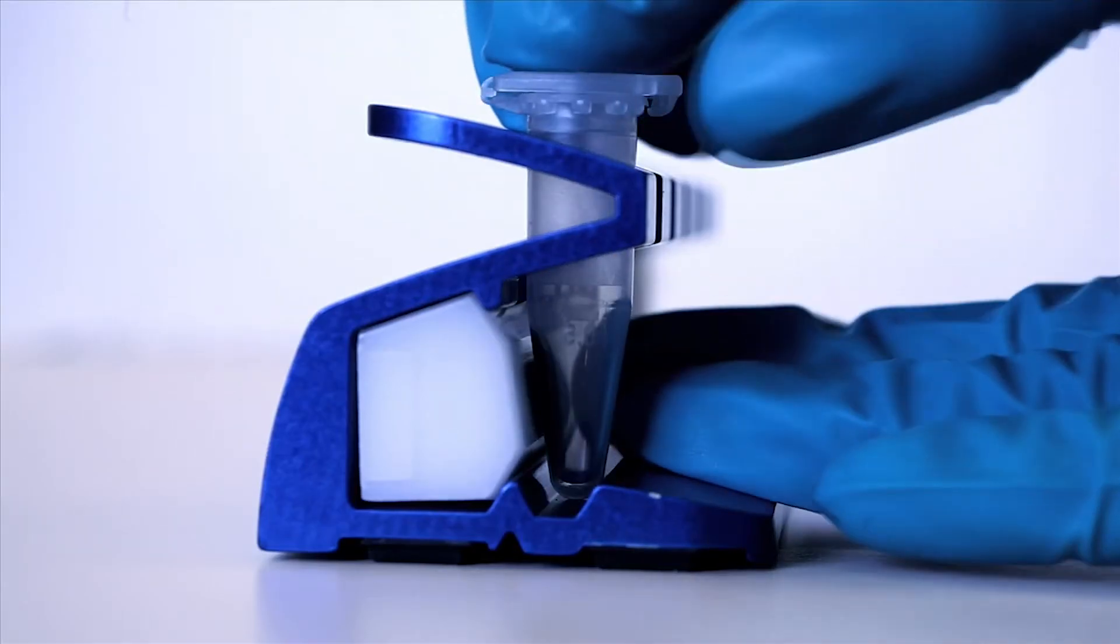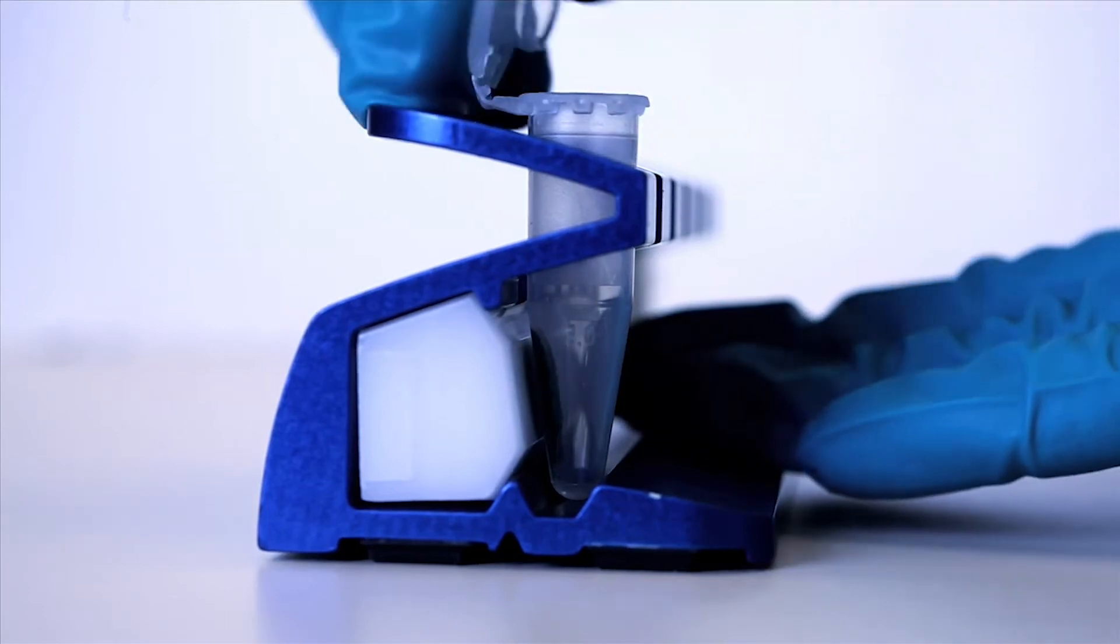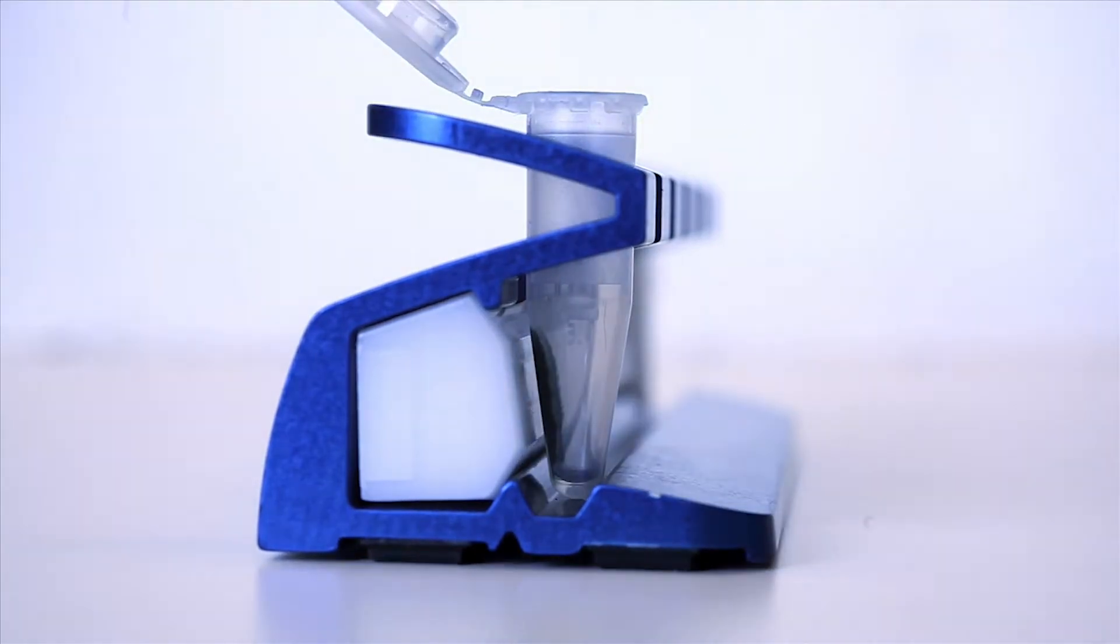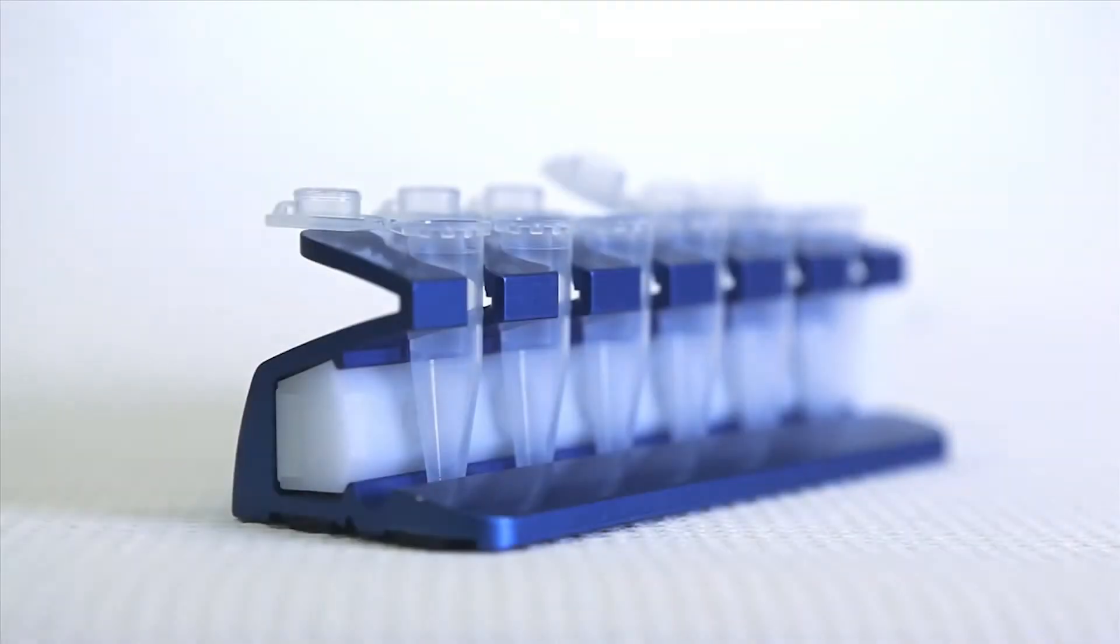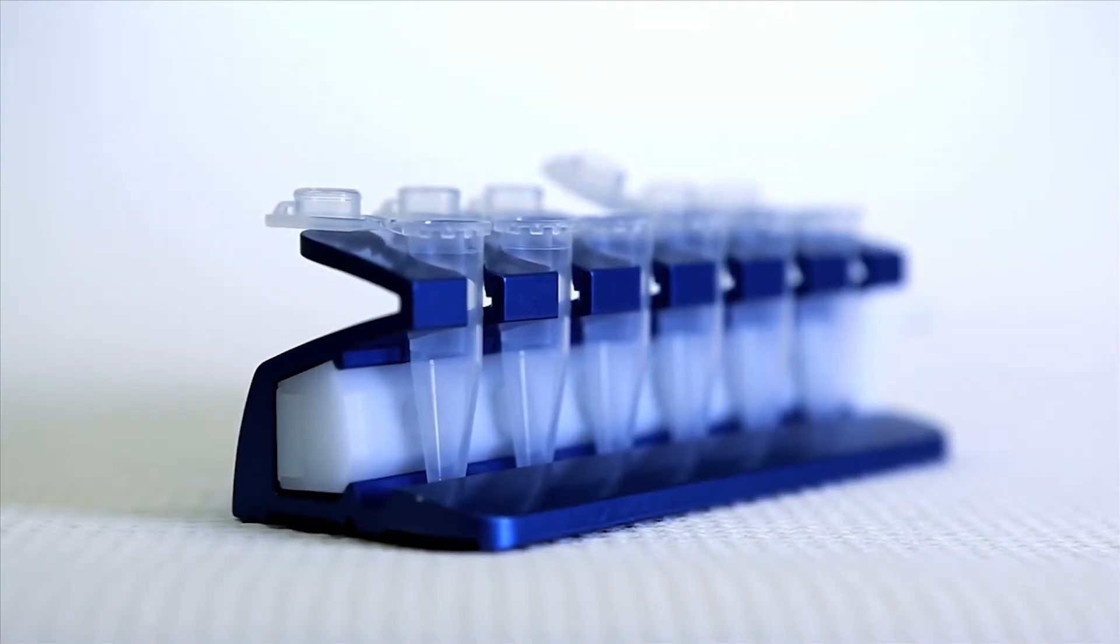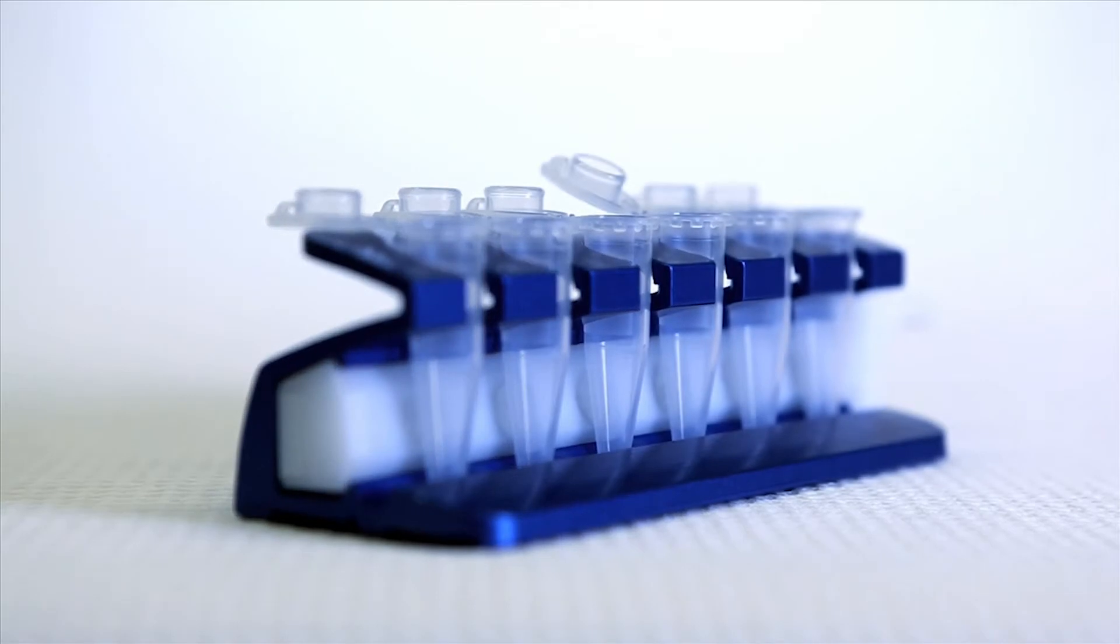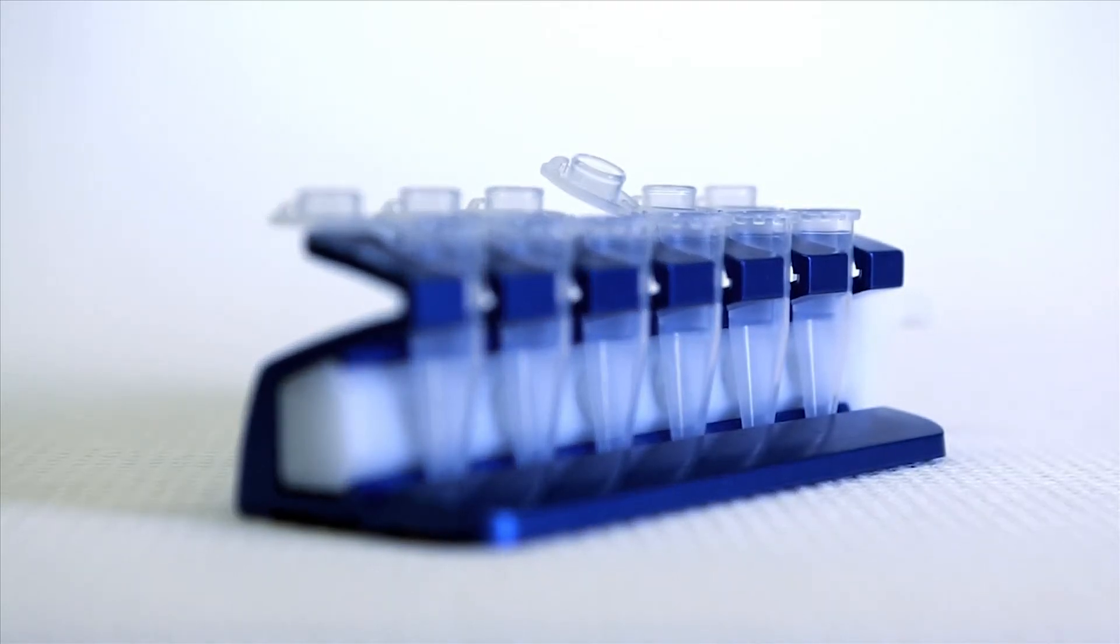MagRack 6, a magnetic rack, is designed for small-scale purification using magnetic beads. Up to six 1.5-milliliter microcentrifuge tubes can be held in the rack and allow multiple separations in parallel.